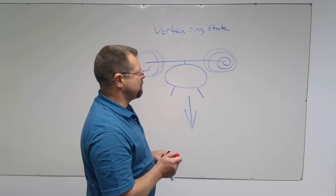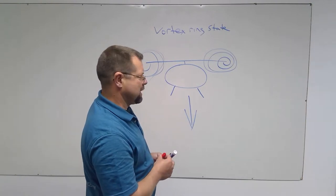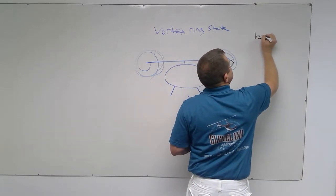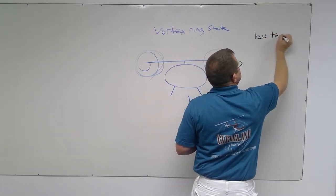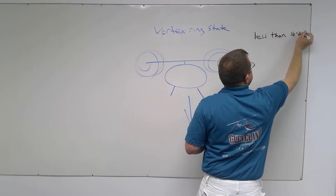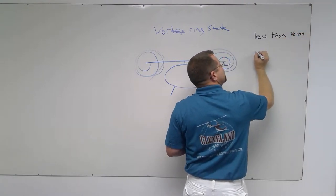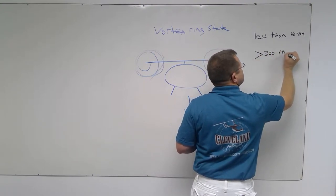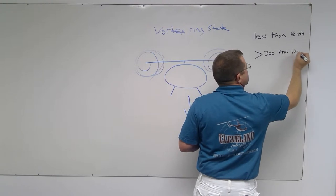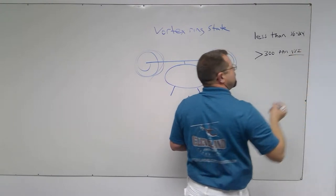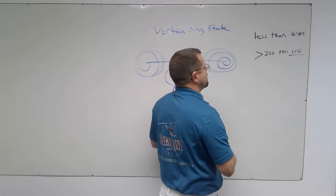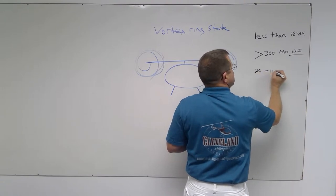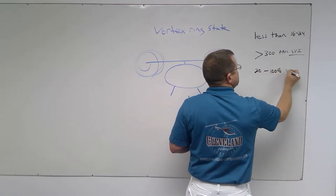Three things have to be present before the helicopter will get into vortex ring state. You have to be traveling less than ETL. You have to have a descent rate greater than 300 feet per minute on the VSI. The VSI is your vertical speed indicator in a helicopter or an airplane for that matter.